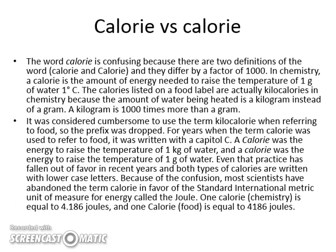Because of the confusion, we now use the measure of energy called a joule. One calorie — a chemistry calorie — is equal to 4.18 joules. You'll need to know that number at the end, so you want to use that conversion. And one calorie in food, capital C, is equivalent to 4,186 joules. Notice that those are different by a factor of a thousand, because a chemistry calorie is a thousand times less than a food calorie.